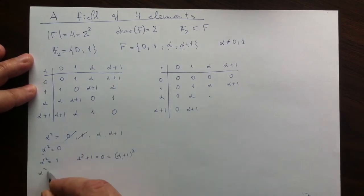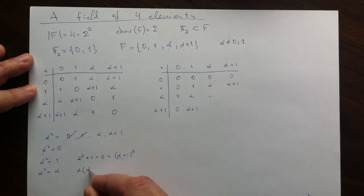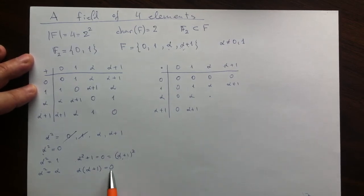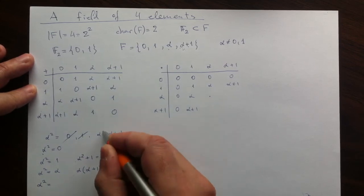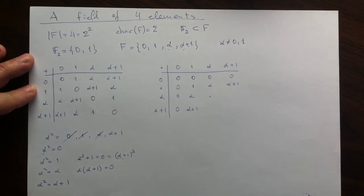Now we are down to this situation that alpha squared is equal to alpha, which is also factorable as a polynomial. Now we have this product being zero. Again, a contradiction in the field. We don't have products of non-zero elements giving us zero. And we are left with just the only option, after scratching this one, that alpha squared has to be alpha plus 1.